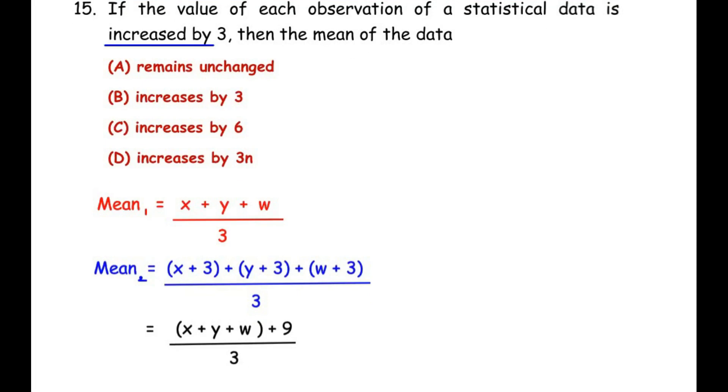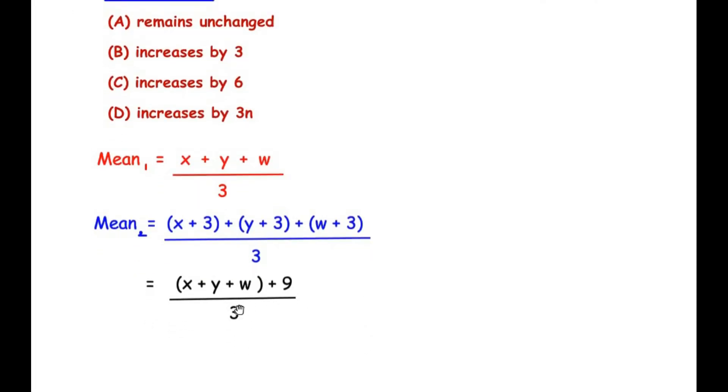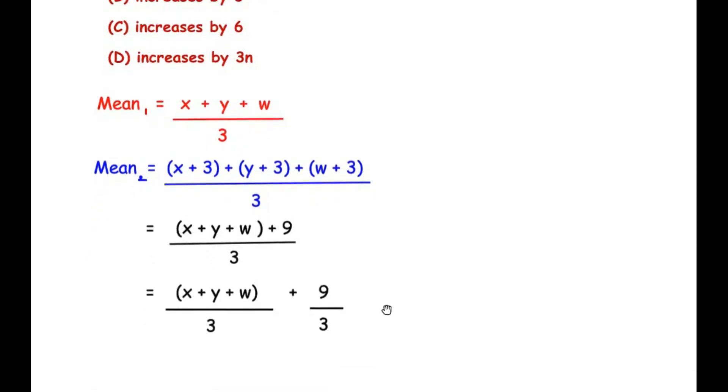Now I am going to separate the denominator 3 to x plus y plus w and 9, and we get (x + y + w) / 3 plus 9 / 3. Now here 3 from the denominator divides the 9 from the numerator, that is 3 times 3 is 9.